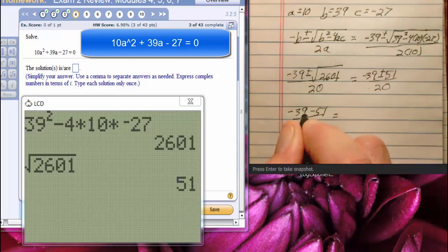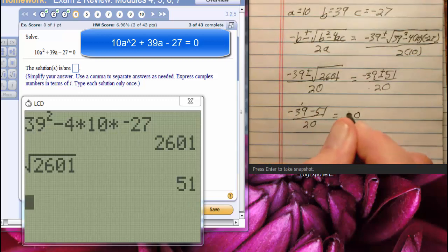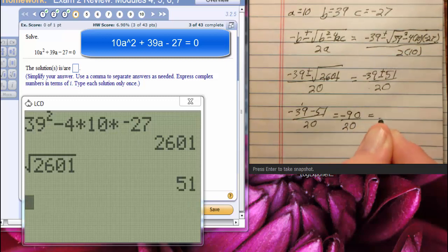That will be 9 plus 1 is 10, carry the 1, 8 plus 1 is 9. We'll have negative 90 over 20, which will be negative 9 over 2.